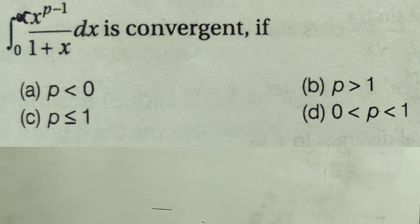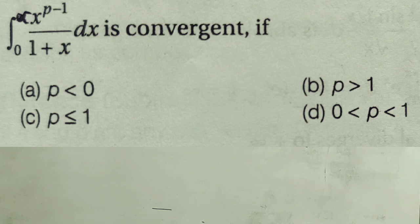This is the problem of improper integration. The given problem is the integration from 0 to infinity of x to the power p minus 1 dx by 1 plus x, which is convergent if — four options are given: p less than 0, p greater than 1, p less than or equal to 1, or 0 less than p less than 1.